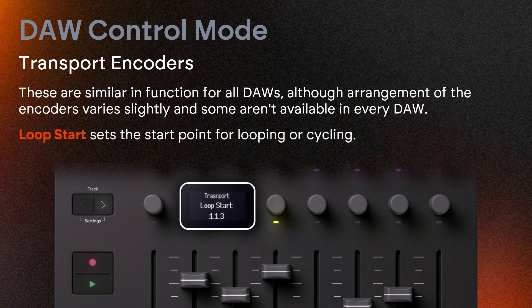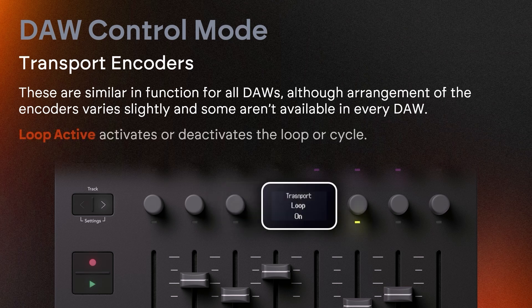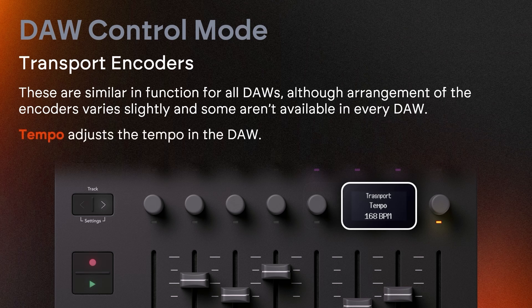Loop Start sets the start point for looping or cycling. Loop End sets the end point for looping or cycling. Loop Active activates or deactivates the loop or cycle. Marker Select navigates between markers. And finally, Tempo adjusts the tempo in the DAW.